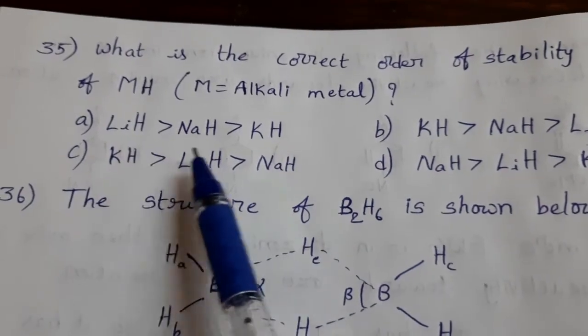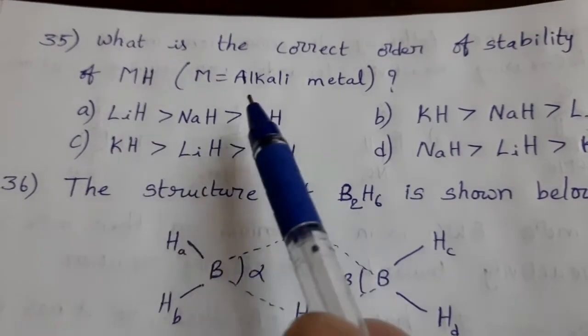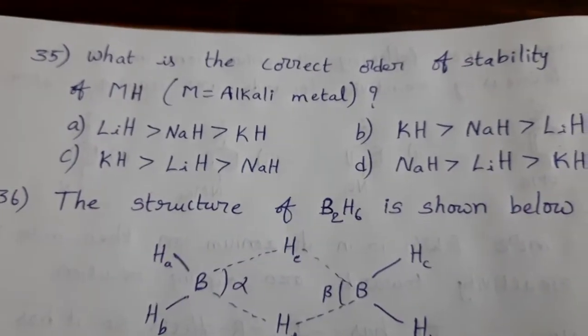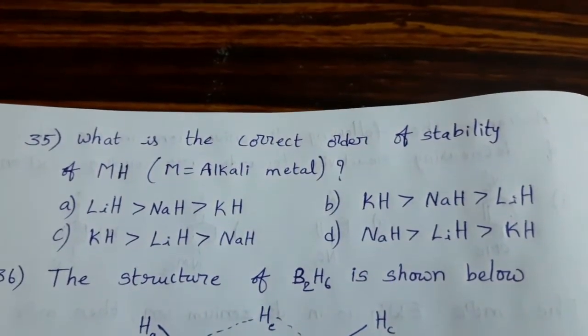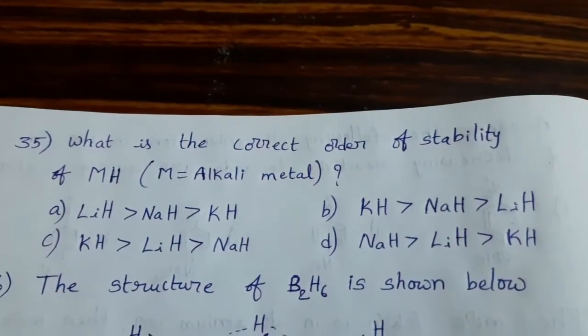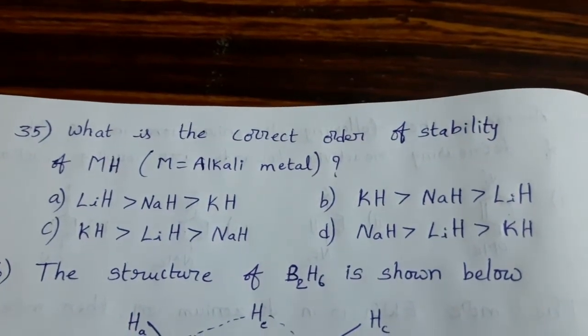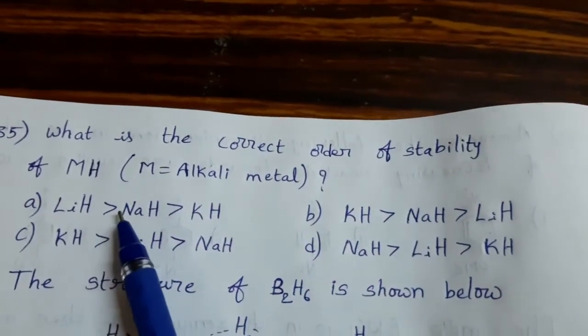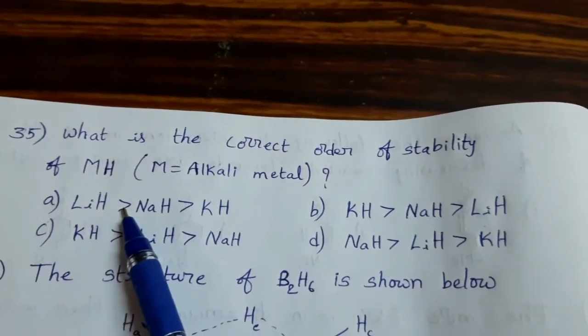Alkali metal: lithium, sodium, potassium - lithium hydride, sodium hydride, potassium hydride. In this, MH bond strength is more, stability is more. Bond strength is less, stability is less. Here, from lithium to potassium, ionic strength decreases. That means stability also decreases. Then, what is the correct order? LiH greater than NaH greater than KH. Option A is the answer.